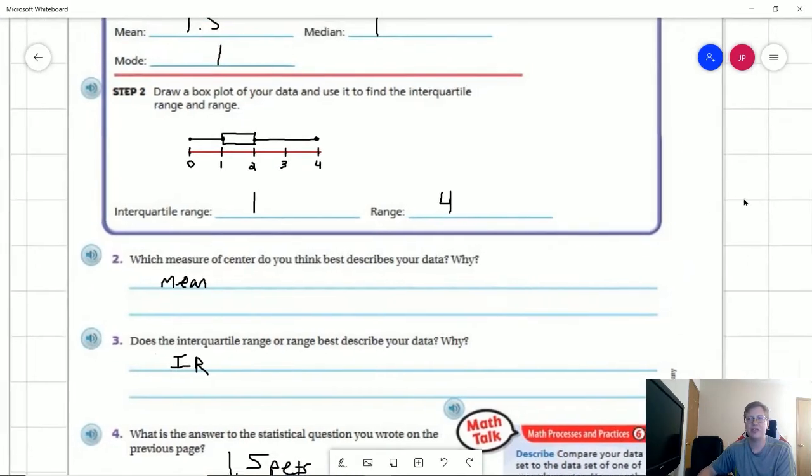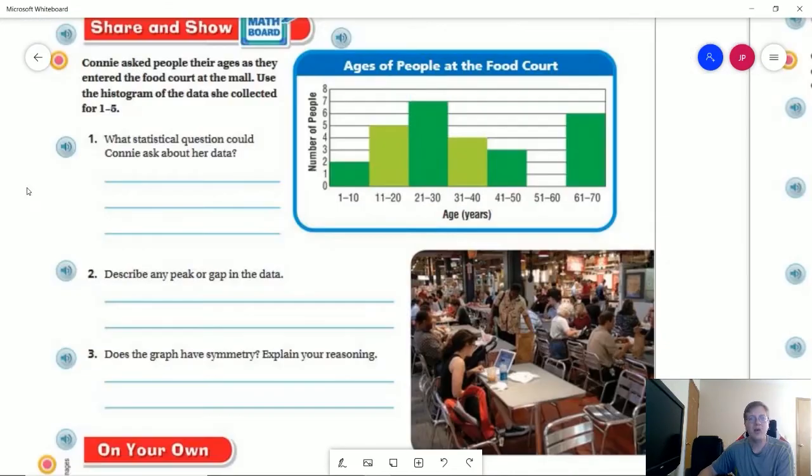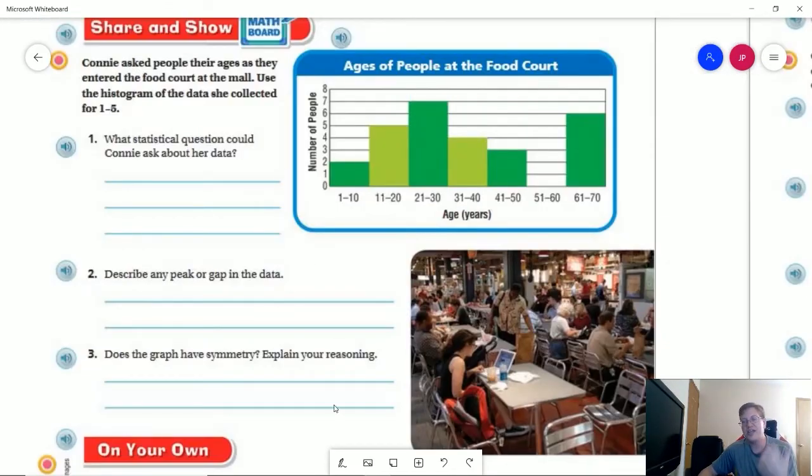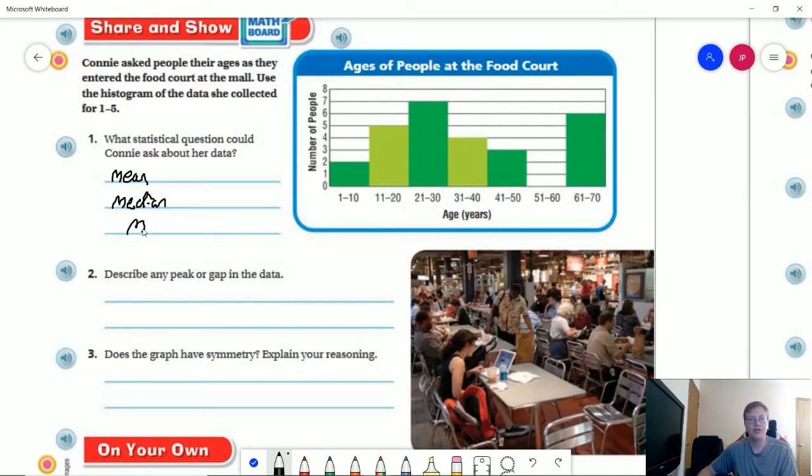Let's take a look at our share and show questions. What statistical question could we ask? We could ask for any of the following things. We can ask for the mean, we can ask for the median, and we could ask for the mode. And we could ask for that in different ways. For the mode, we could say...